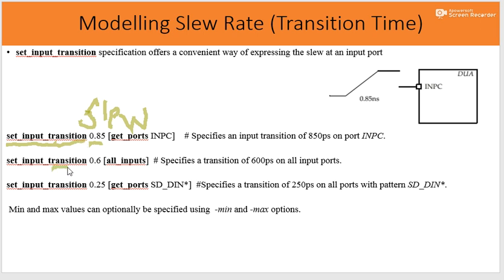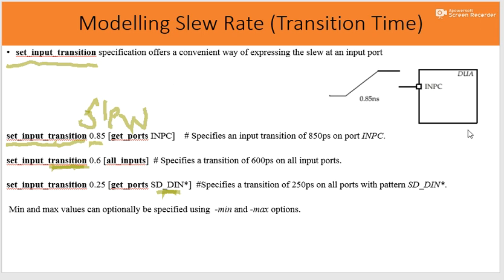The set_input_transition command is similar to set_drive, but instead of writing a resistance value, we write the slew value in nanoseconds and specify which port to map using get_port. For example, set_input_transition 0.6 applies a 600 picosecond slew to all inputs. set_input_transition 0.25 [get_port st_in] specifies 250 picoseconds of slew time for the port st_in.